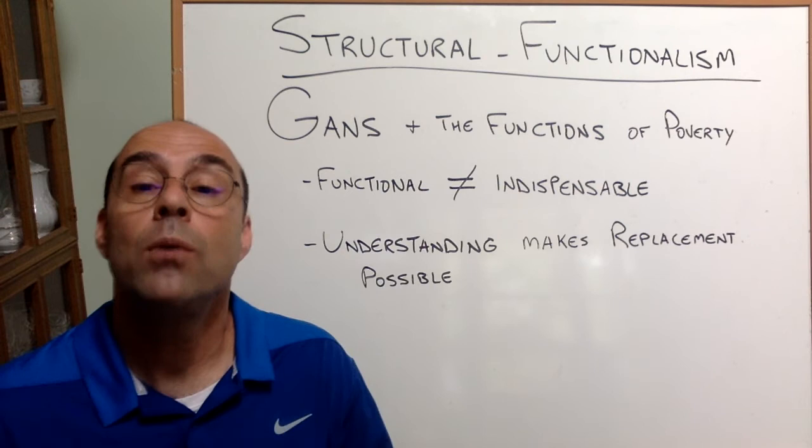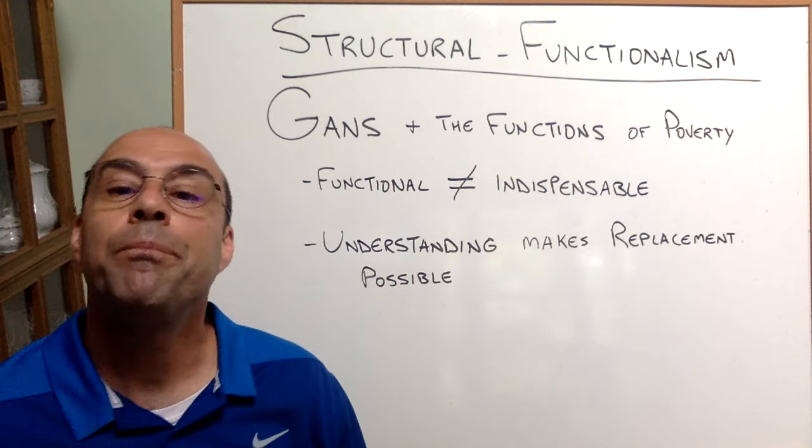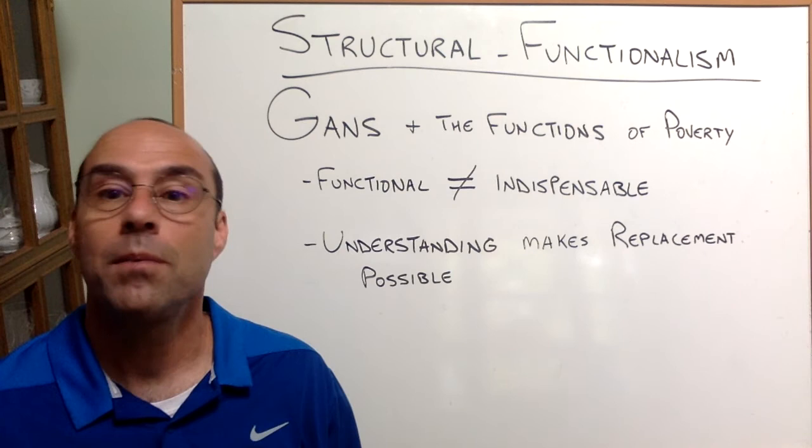So what he says is in order to try to alleviate suffering, we need to understand those functions because understanding makes replacement possible. And by that, what he means is that in order for us to get rid of poverty, we have to be honest about the fact that poverty is playing this role.